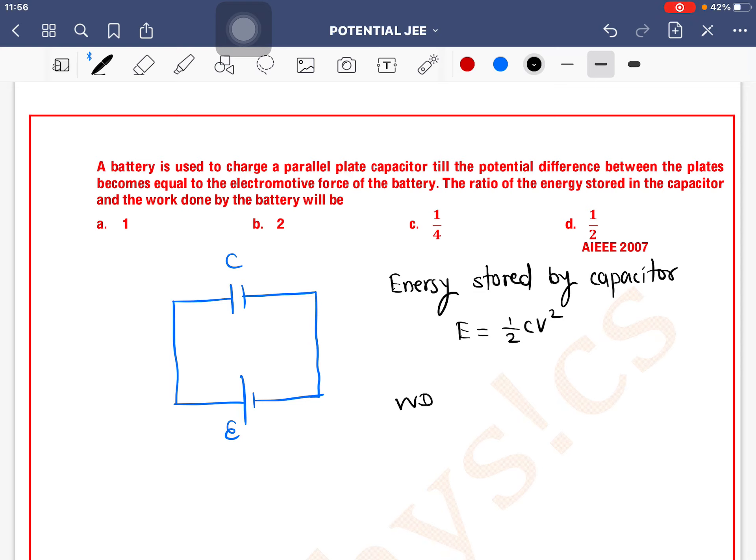Work done by battery - there's also a direct formula for this. Work done is CV squared.